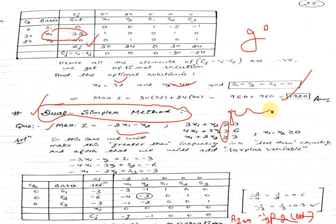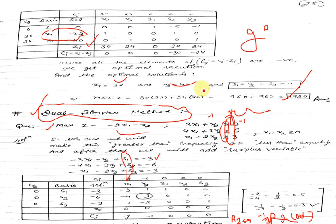To convert these to less-than form, we multiply both sides by minus one. We get minus 3x1 minus x2 on the left side, and the inequality becomes less-than-or-equal. Once it becomes a less-than inequality, we add slack variables — these are called surplus variables, because the original constraint was a greater-than inequality that we manually converted.